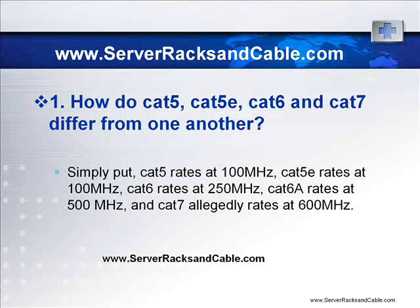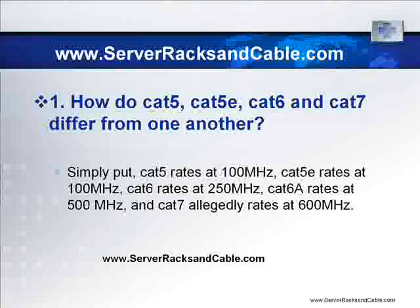Nowadays Cat7 is not approved by the TIA, but is recognized by ISO. Presently, Cat5e or Cat6 are the most commonly used options in today's telecommunication systems. Cat6 cables are being created with separators that deal with improved crosstalk and better 23-gauge conductor wires compared to the smaller Cat5e 24-gauge ones.